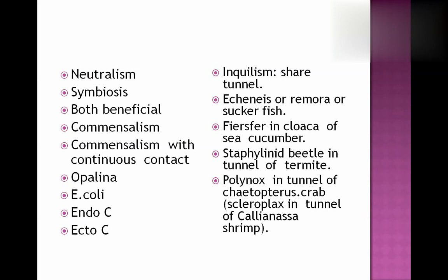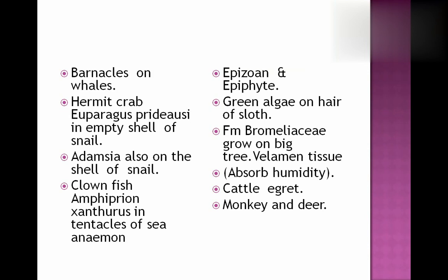Polynox live in the tunnel of Ctenostomata. Crab Scleroplax lives in the tunnel of Callianassa shrimp. Barnacles live on the body of big whales — barnacles get protection and shelter on the body of whales, while whales are not affected by this relationship.